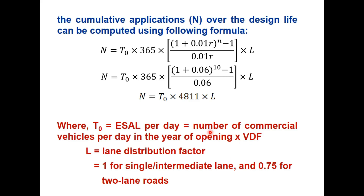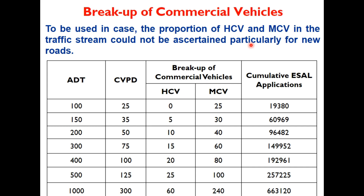The cumulative number of ESAL applications over the design life is computed using the standard equation, where T₀ is ESAL per day — the number of commercial vehicles per day in the year of opening multiplied by the VDF factor. The lane distribution factor L is taken as 1 for single and intermediate lane roads and 0.75 for two-lane roads. If the proportion of heavy and medium commercial vehicles is unknown, a breakup table based on ADT is used to estimate cumulative ESAL applications.